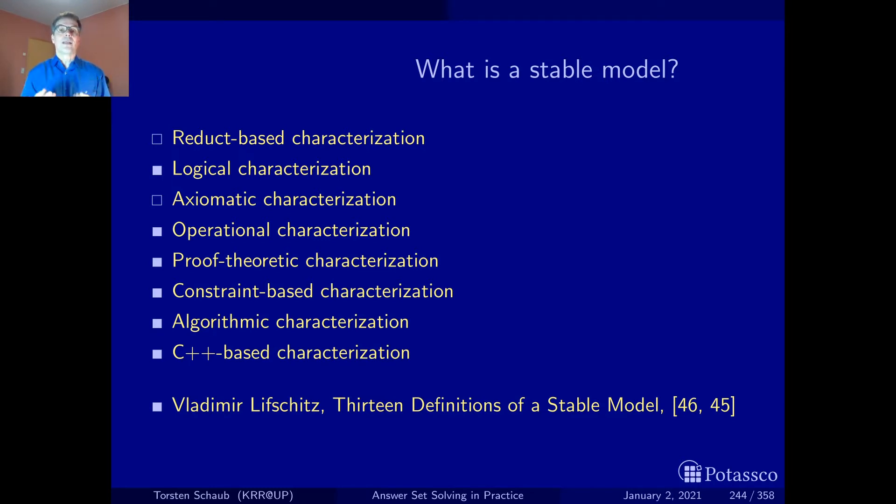In addition we saw that in order to suppress cyclic derivations we need loop formulas that help us ensure each atom is derived in a non-cyclic way. These are the properties we can now pour into the definition of operators that will allow us to describe propagation in ASP solvers. This is what this operational characterization is about.